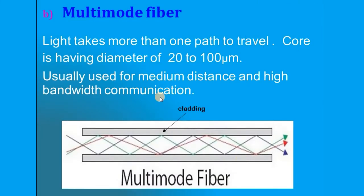The second classification is multi-mode fiber. There will be more than one ray path — light takes more than one path to travel. With more than one ray path, the core has a greater diameter ranging from 20 to 100 micrometers. It is generally used for medium distance communication and high bandwidth communication. You can see many zigzag ray paths within the fiber.